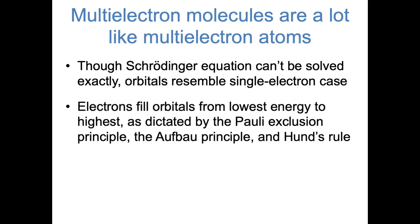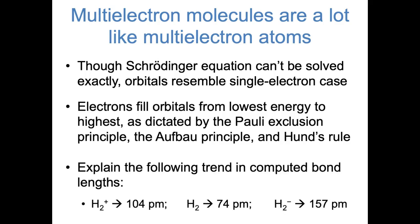Another similarity is the way electrons fill the orbitals. As with atoms, the electrons obey the Pauli principle — we can only have two electrons, one spin up and one spin down, in each spatial orbital. The electrons follow the Aufbau principle and fill orbitals from lowest energy to highest energy, and follow Hund's rule that when we have a choice, electrons prefer to have parallel spins in different spatial orbitals. With that in mind, here's some data on the computed bond lengths of three molecules — H2+, neutral H2, and H2−. Neutral diatomic hydrogen has a much shorter bond than either the cation or the anion. Spend a few seconds thinking about why that might be.